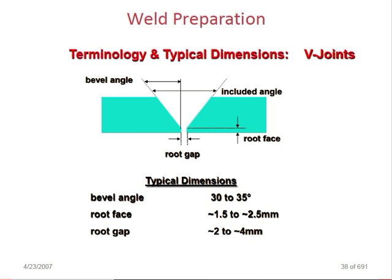Butt preparation terminology and typical dimensions for V-joints: the bevel angle is the single-side angle and the included angle is the full angle. Root gap and root face are key dimensions. Typical values: bevel angle 30 to 35 degrees, root face 1.5 to 2.5 mm, root gap 2 to 4 mm. These are the normal practice dimensions you must remember.